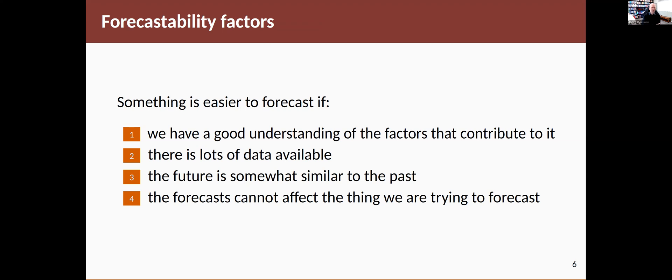But the fourth one is a problem. The forecasts do affect the thing you're trying to forecast. If some well-known person publicizes an exchange rate forecast, like the treasurer of a country for example, then that will directly affect the thing you're trying to forecast, and so you have some feedback which causes some problems. So those are the factors that I think make it easier or difficult to forecast something.